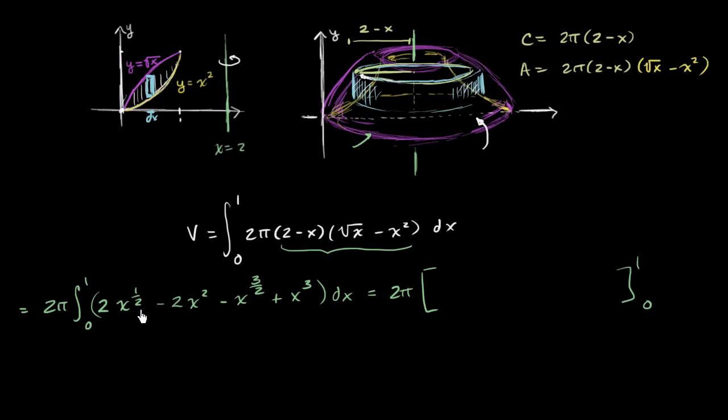So the antiderivative of 2 times x to the 1/2 is going to be 4/3 x to the 3/2.